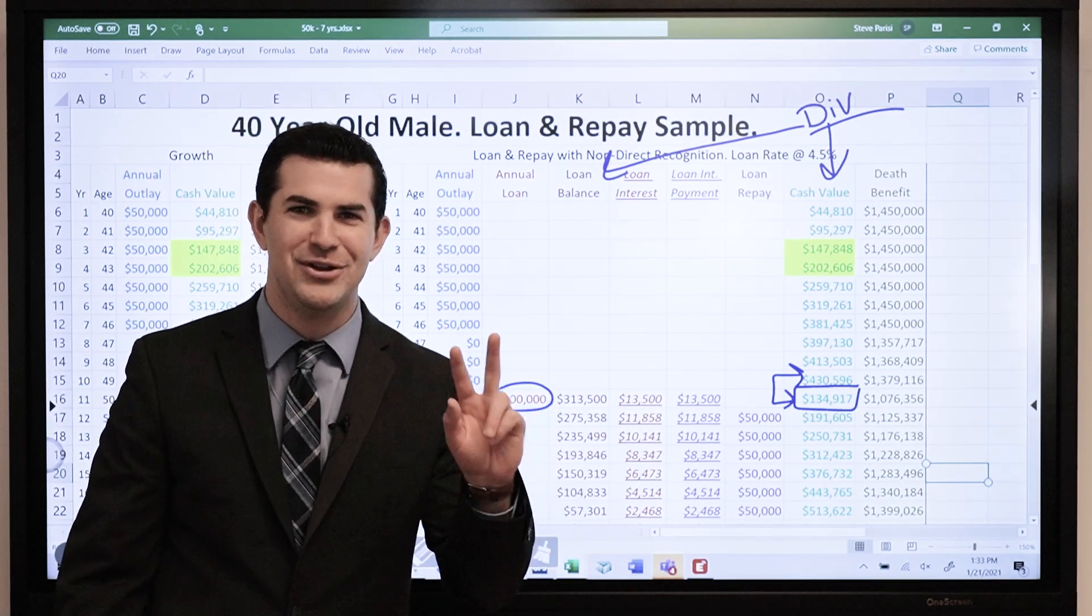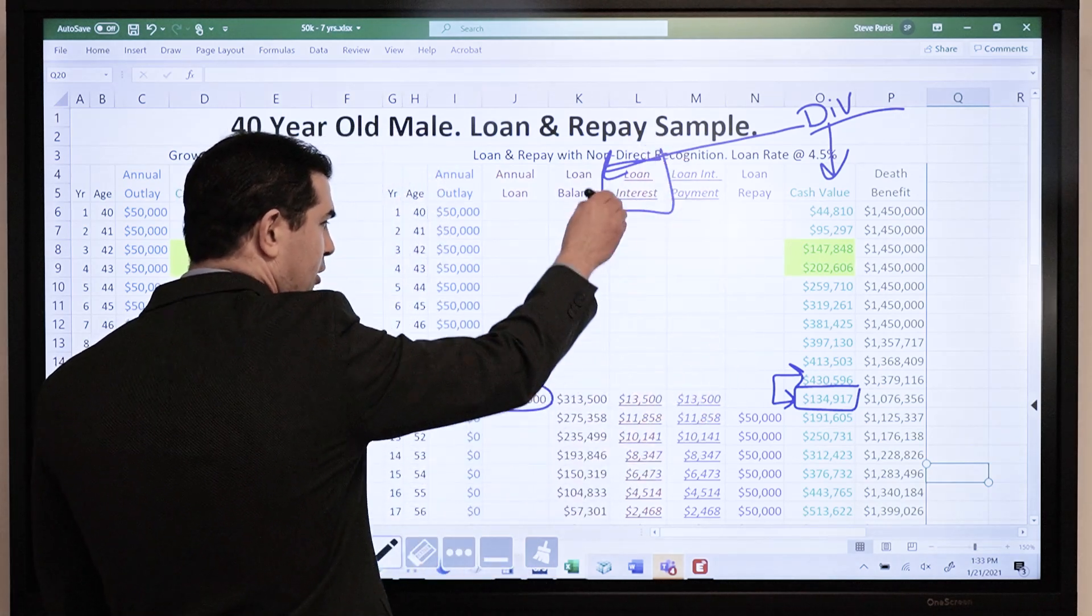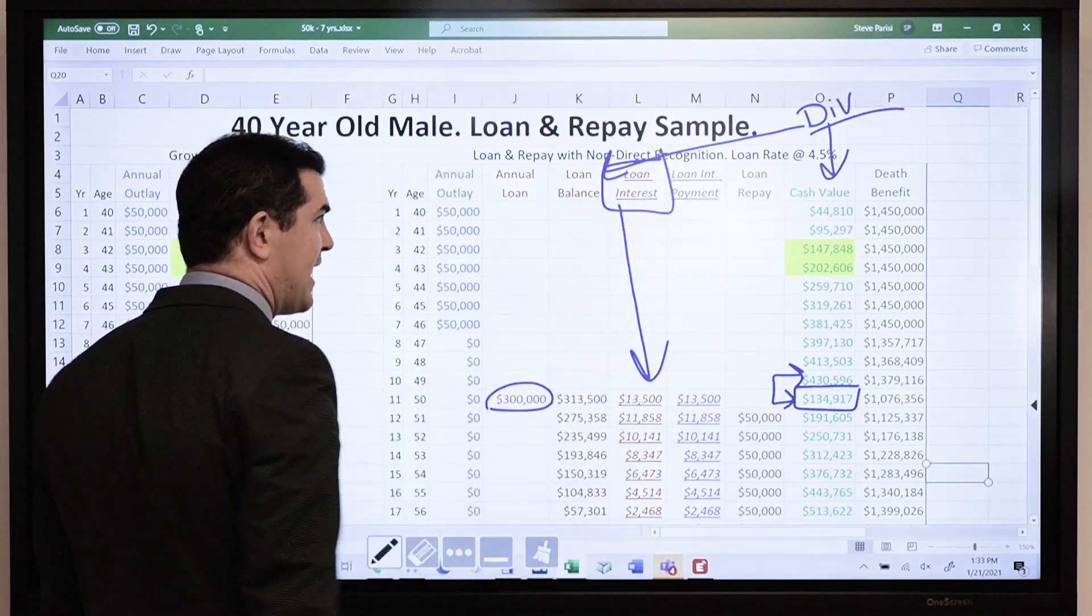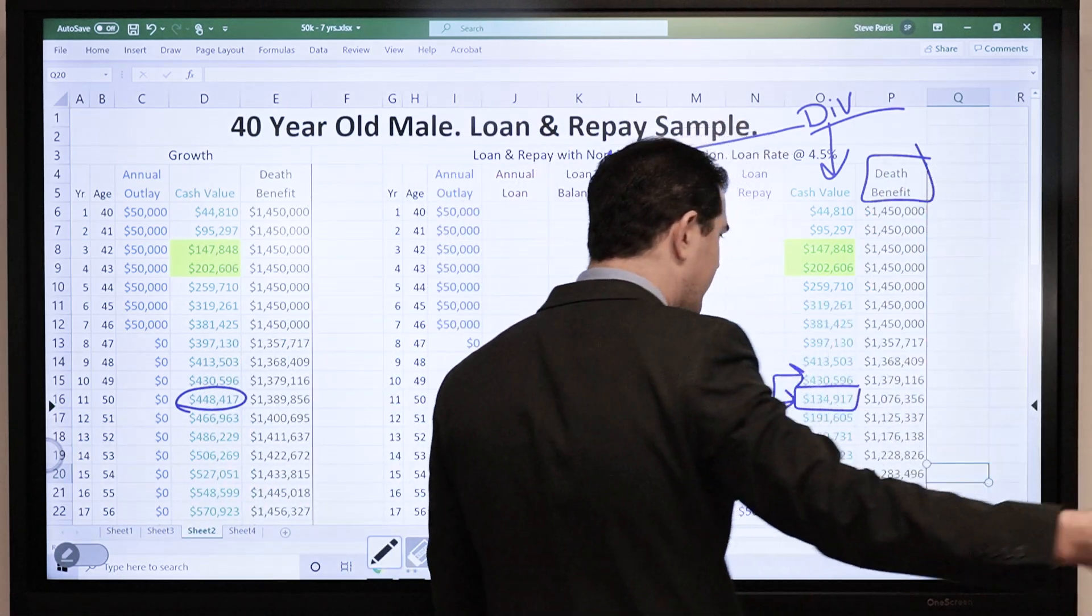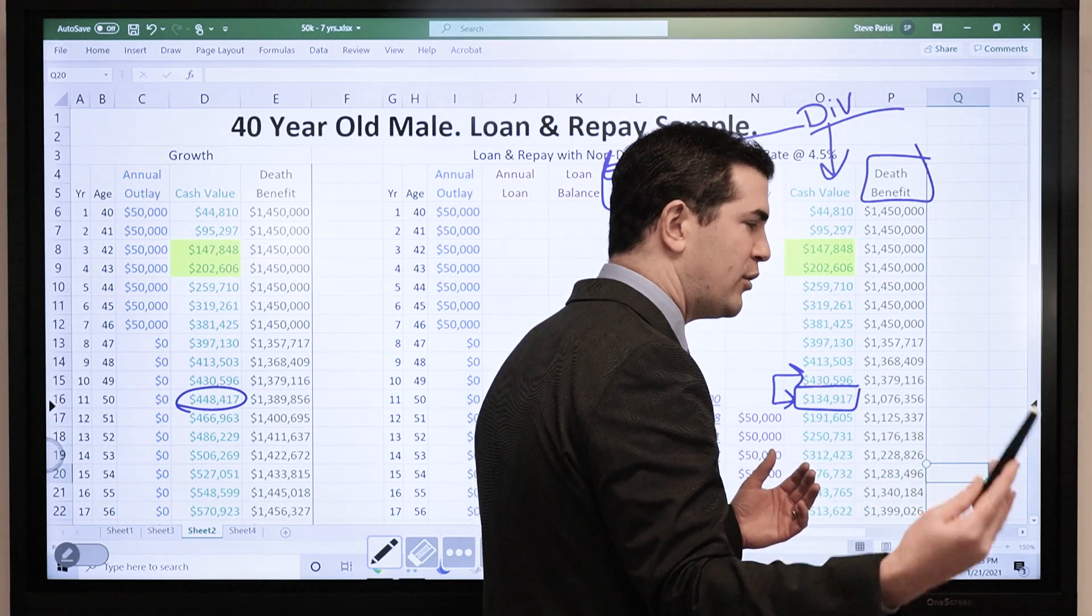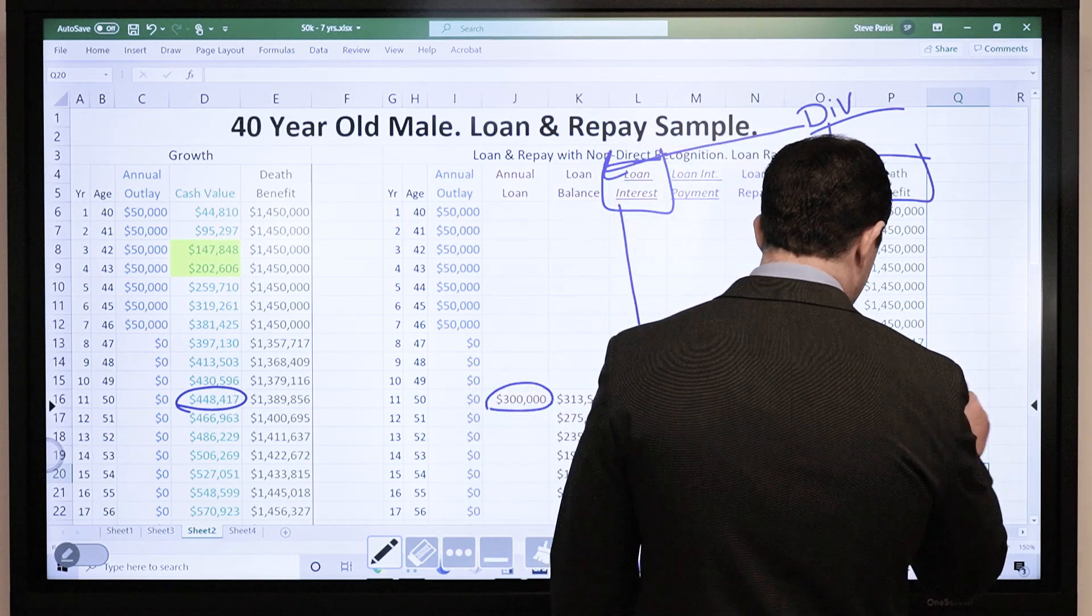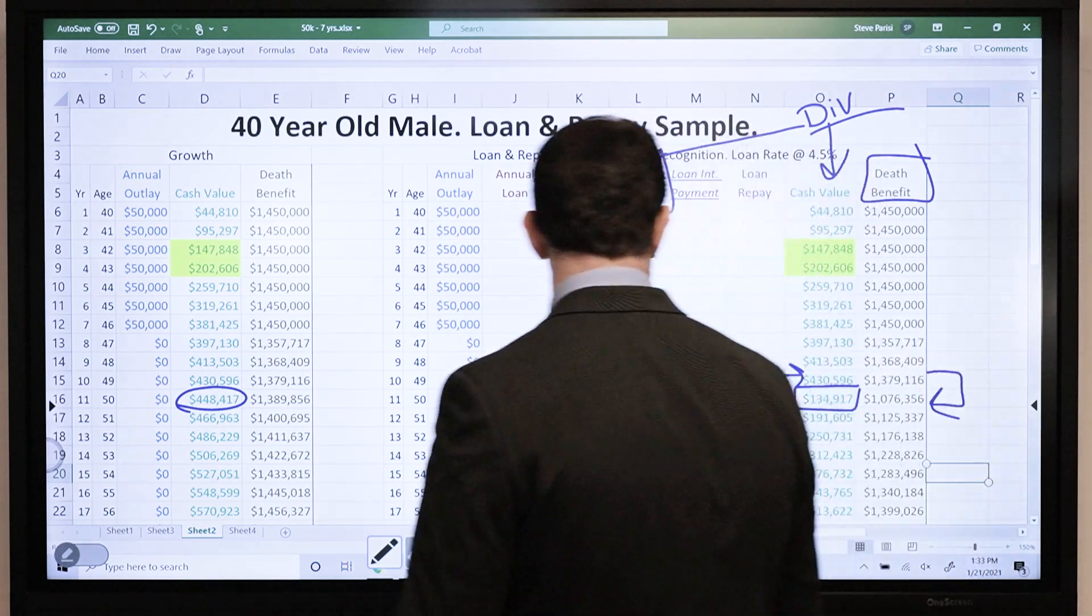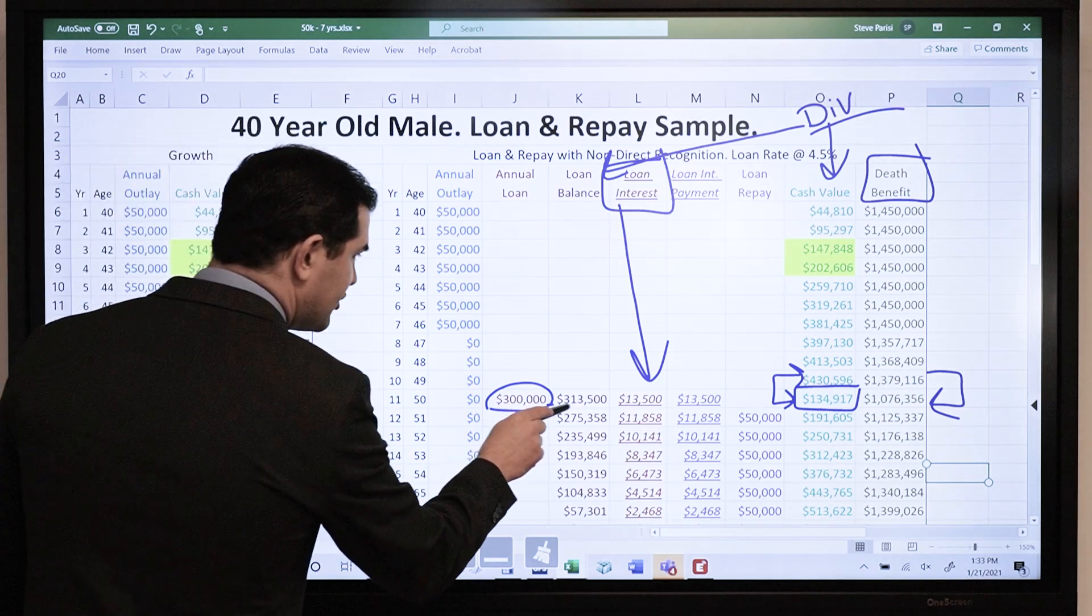That sounds great. How are you going to do that and why? Well, two reasons why. One, there is a loan interest expense, a cost to borrow. In this example, it's 4.5%. And then when we take out a loan, if I'm still going to earn interest on my entire asset, what's going to exist? Collateral. They're going to collateralize the death benefit. You will see a reduction of the loan balance.